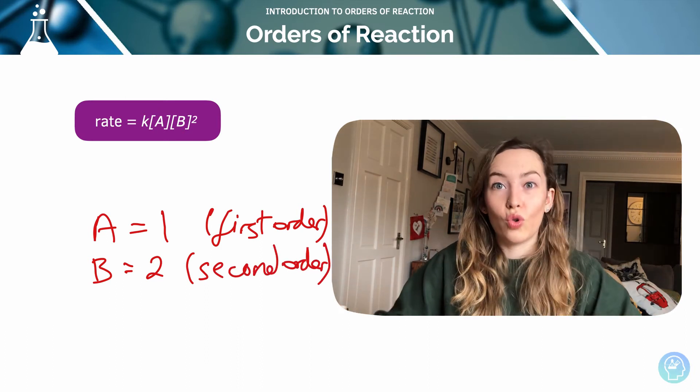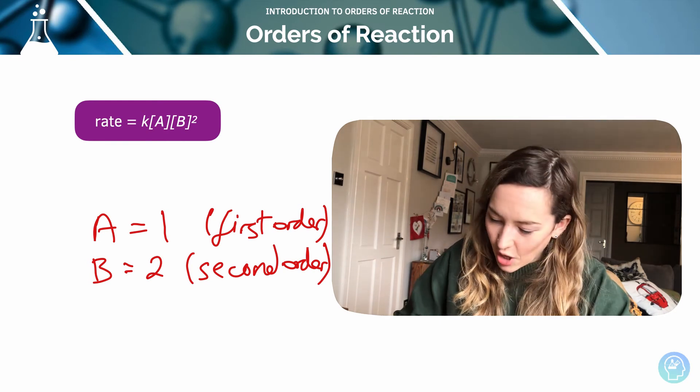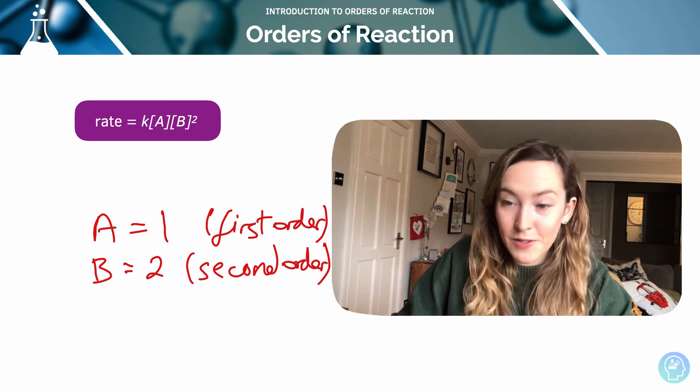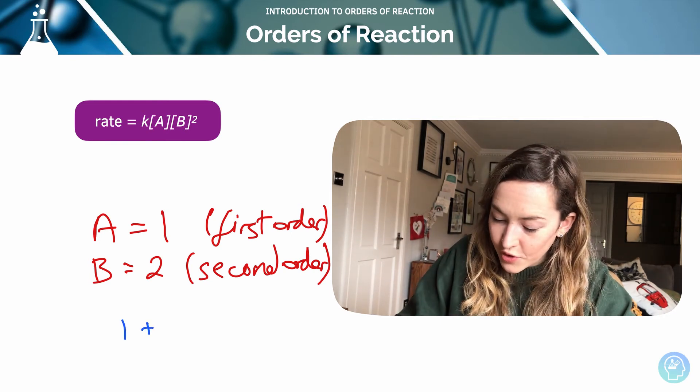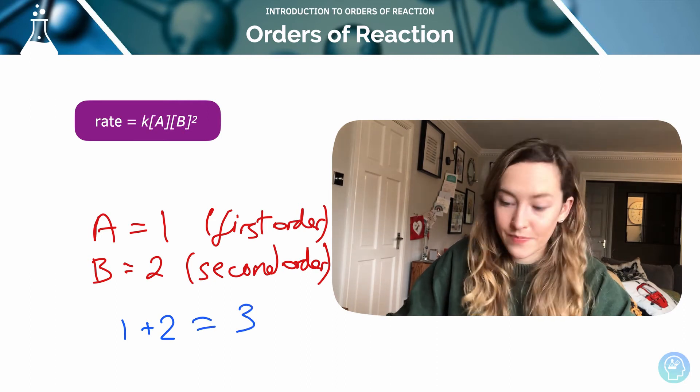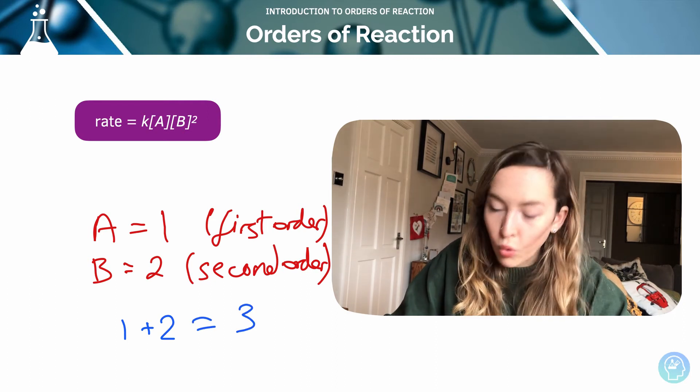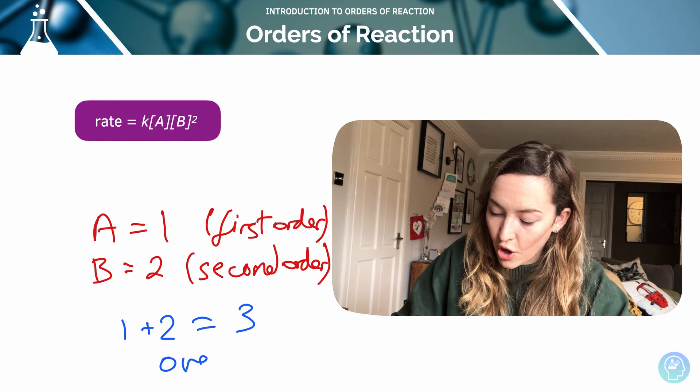The overall order of reaction is going to be A plus B. So 1 plus 2 is 3, which means the overall order of reaction is third order.